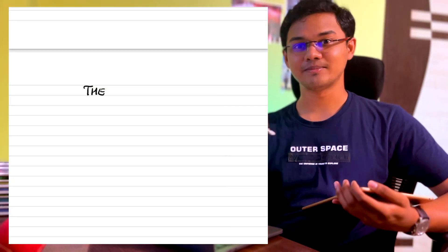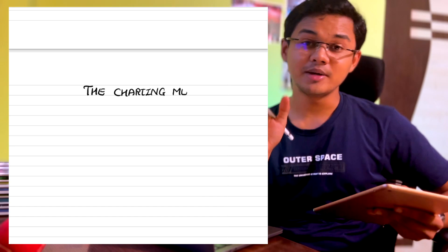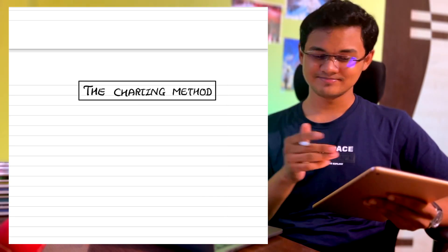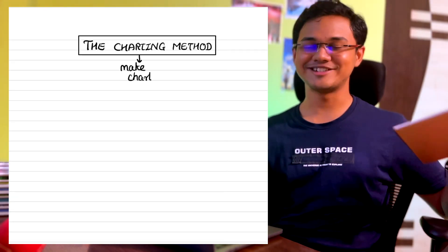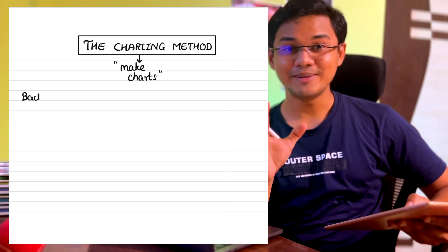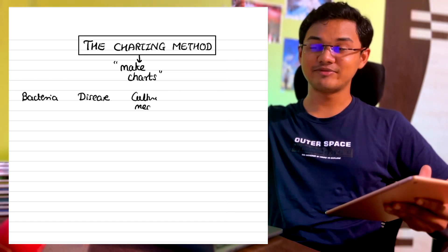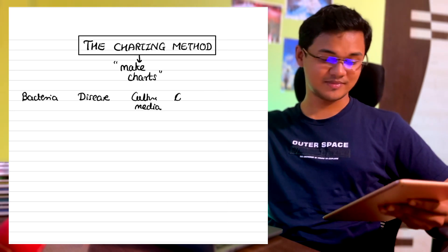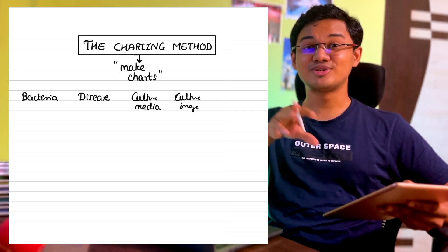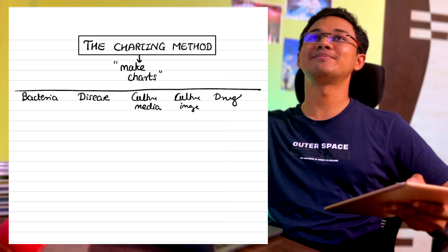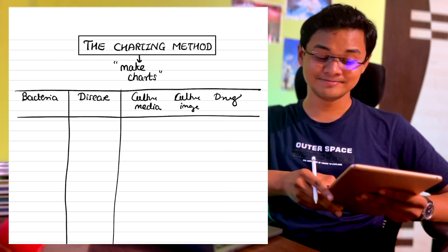The next method is the charting method, which fills the gap we had with the outline method. This method asks you to make charts — usually tables of information — so that you can compare items side by side and spot the differences as well as learn them. This is the method I used to learn all the bacteria, viruses, and parasites in microbiology. I recommend it for anyone trying to learn many examples of the same topic with the same headings — it is great for comparison and summarizing a series of information.